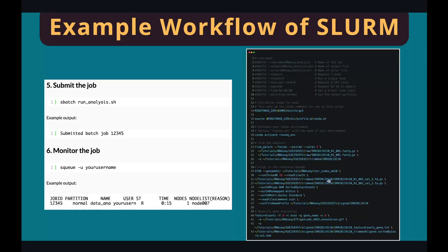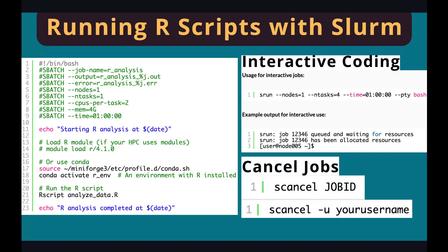Once it's done, save the job script and submit using sbatch, and the job will start running on HPC. You can also run an R script — if you have everything in R, you can run an R script using the Rscript command followed by the name of your R file.